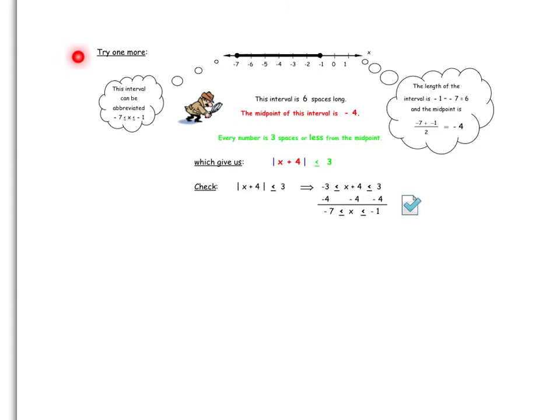They're all the same. You might be told the interval is from negative 7 to negative 1, or you might be given the graph from negative 7 to negative 1. In any case, if you're trying to describe this interval and x is going to be a number in the interval, then we have to find two things. The length of the interval, which is negative 1 subtract negative 7 is 6 spaces long, and the midpoint of the interval is negative 4. If the interval is a total of 6 spaces long, then from negative 4 up to negative 1 is 3 spaces, and from negative 4 down to negative 7 is 3 spaces.